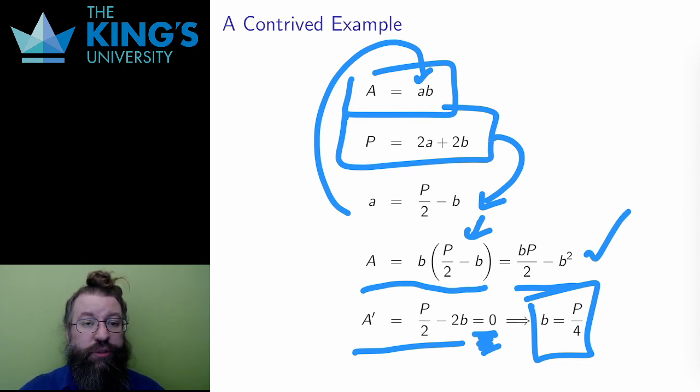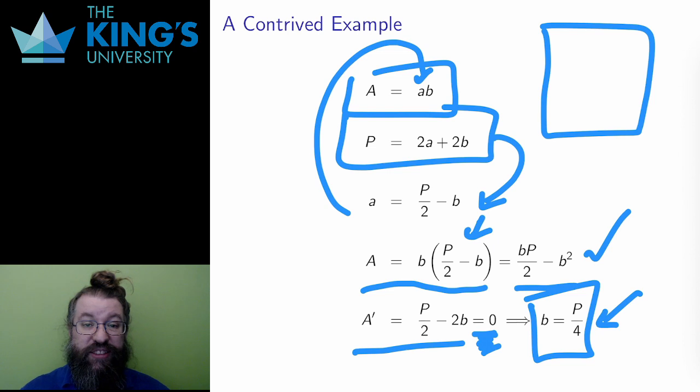However, for applied problems, I can often use the situation to make a conclusion. Remember what these letters mean. b equals P over 4 means that the side length is one-quarter of the perimeter. Well, that's a square. And this makes some sense that a square would maximize the area.